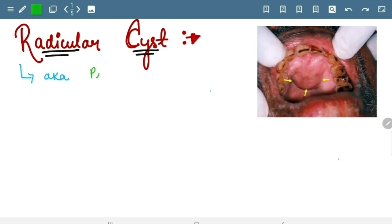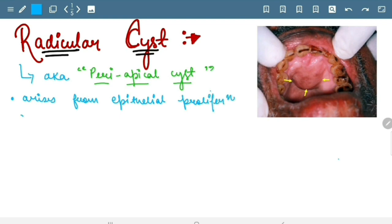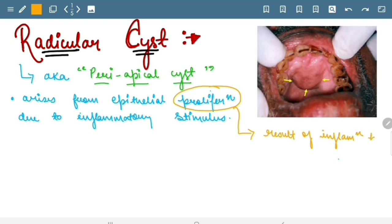Firstly, we will talk about its other name. It is also called as periapical cyst. It arises from epithelial proliferation due to inflammatory stimulus. Okay, here this proliferation results of inflammation by bacterial products.